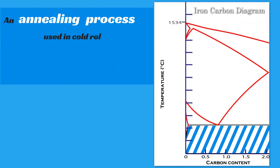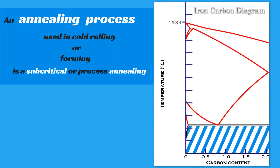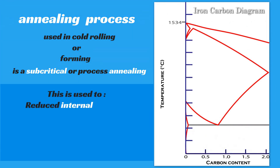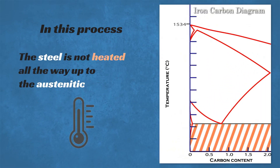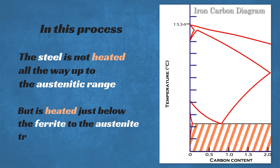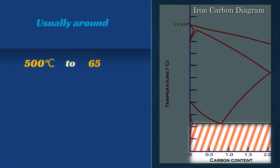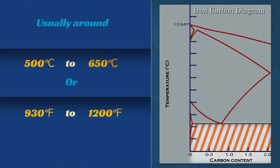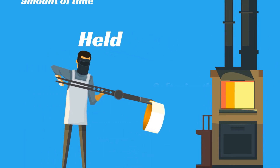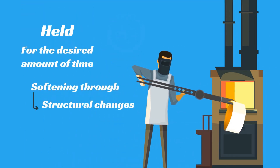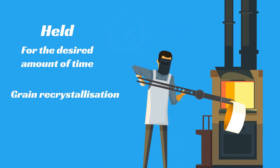An annealing process used in cold rolling or forming is a subcritical or process annealing. This is used to reduce internal stresses after manufacture or to enable further processing. In this process, the steel is not heated all the way up to the austenitic range, but is heated just below the ferrite to austenite transformation temperature — usually around 500°C to 650°C (930°F to 1200°F). The material is then held for the desired amount of time to cause softening through structural changes, primarily grain recrystallization and grain growth.